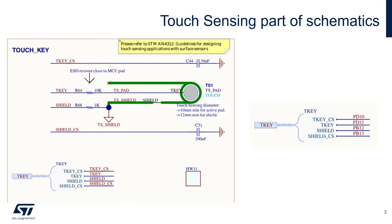Let's look at the touch sensing part of the schematics. The touchpad on the board is connected to the signal TKEY, which is PD11 on the STM32U0. The sensing capacitor for this key is 39 nanofarads and is connected to signal TKEY_CS, which is connected to PD10 on the STM32U0. There is also a serial resistance of 10k ohms for ESD protection.